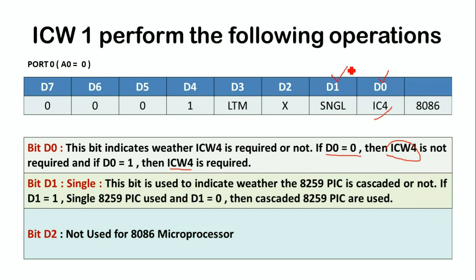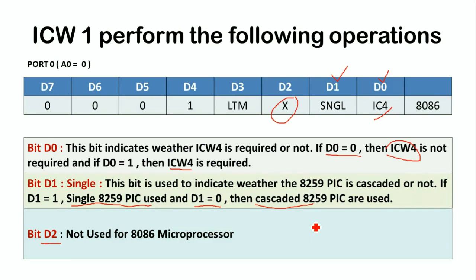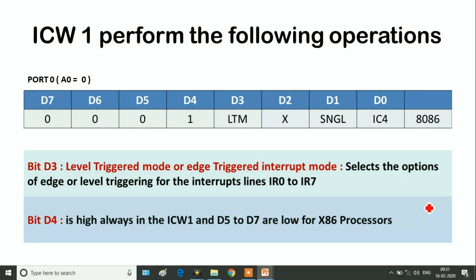Coming to bit D1, this represents whether the 8259 PIC is in cascaded mode or not. If D1 equals 1, we have a single 8259 PIC. If D1 equals 0, then the 8259 PIC is in cascaded mode, where more than one PIC can be used. The bit D2 is not used for the 8086 microprocessor; it is generally used for the 8085 microprocessor.